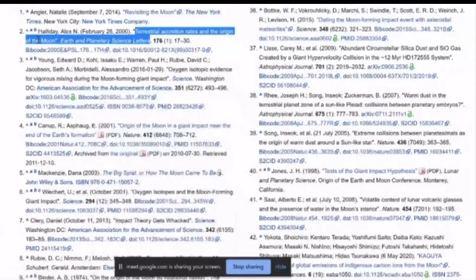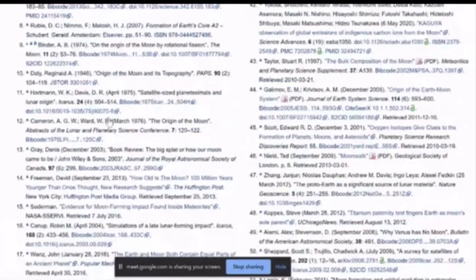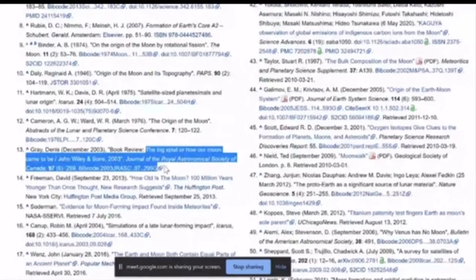Well there's your scientific papers that they used to cite it. Terrestrial accretion rates on the origin of the Moon. And number 13 was, oh this was what I found, for The Big Splat or How Our Moon Came to Be. Sounds scientific doesn't it, man.